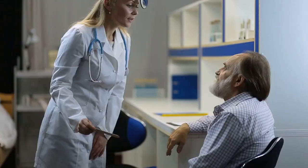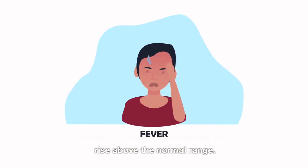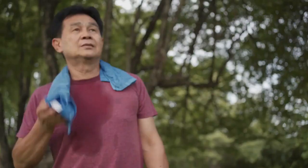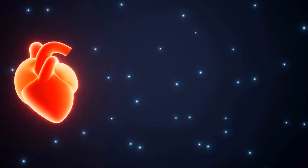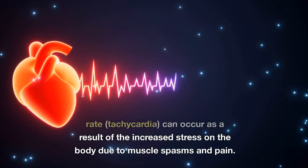Difficulty swallowing: Tetanus can cause difficulty in swallowing, known as dysphagia, due to the stiffness and spasms of the throat muscles. Fever: A fever is common in tetanus cases; the body's temperature may rise above the normal range. Sweating: Excessive sweating, especially during muscle spasms. Rapid heart rate: An elevated heart rate, tachycardia, can occur as a result of the increased stress on the body due to muscle spasms and pain.